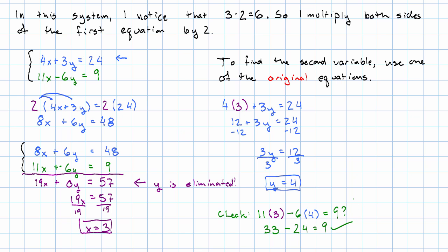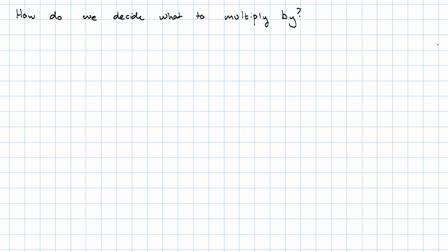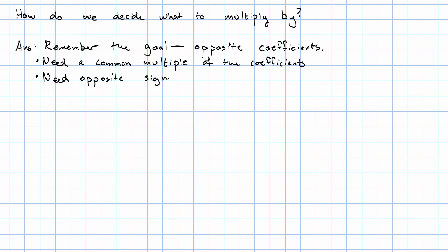So how do we decide what to multiply by? The short answer is remember what we're trying to accomplish. So whichever variable we're trying to eliminate, we need a common multiple of the coefficients and we need opposite signs, one positive, one negative. So let me show you an example that's really awkward as far as making this happen. And I'll show you a technique that always works.